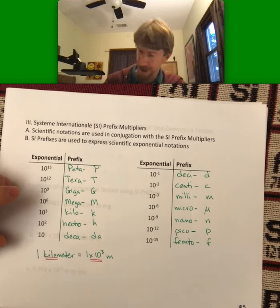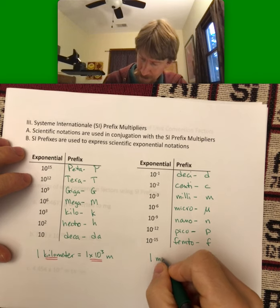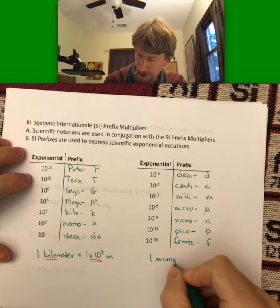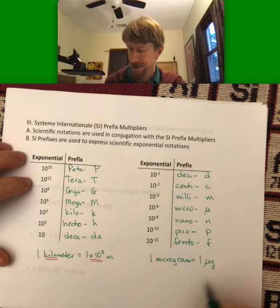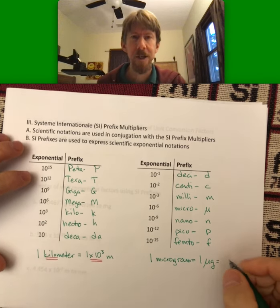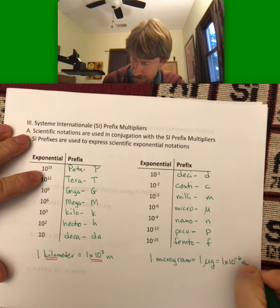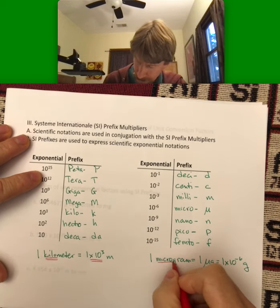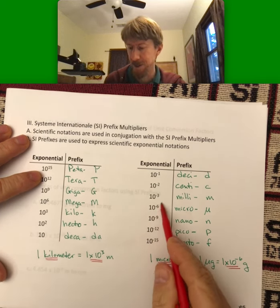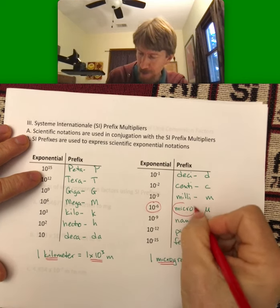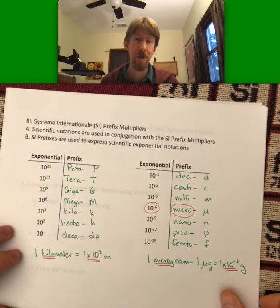On the other hand, if we go to the smaller ones, one microgram equals 1 times 10 to the minus 6 grams. So it's like a direct correspondence between 10 to the minus 6 and the word micro—you can sub it right in. All right, so those are our prefixes.